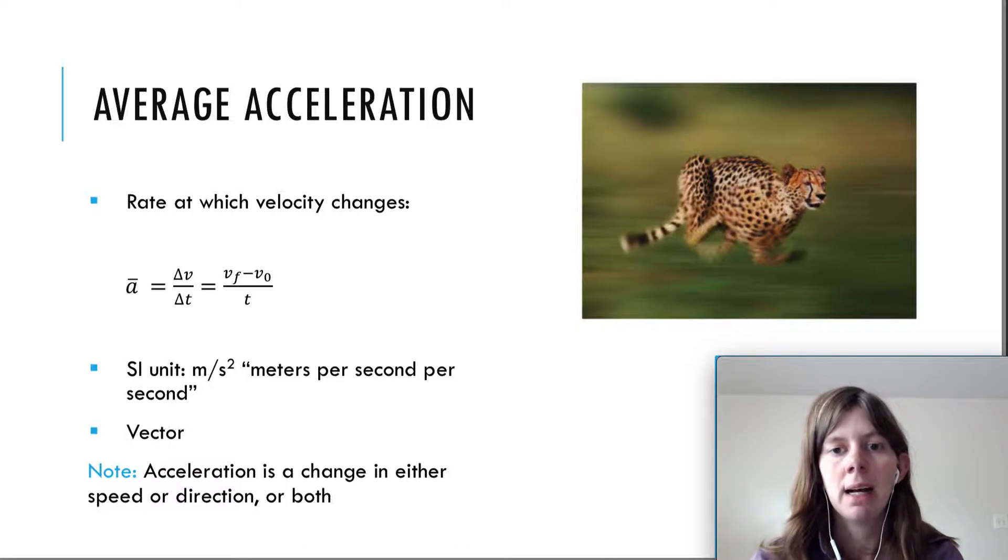So, acceleration is defined as the rate at which velocity changes. How long does it take for your velocity to change? We have your average acceleration, notated with the bar on top of A here for average, is delta V over delta T. Where once again, we're just using T for delta T because the initial time is 0.